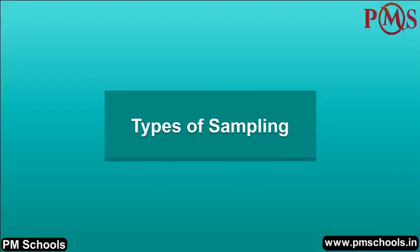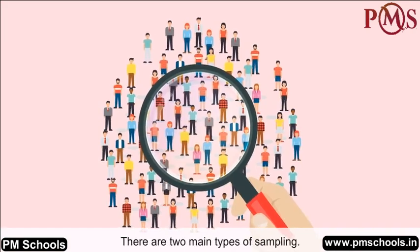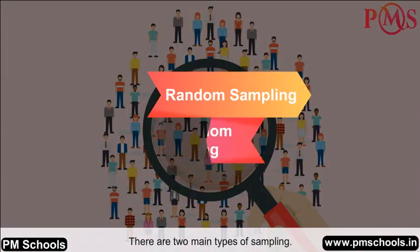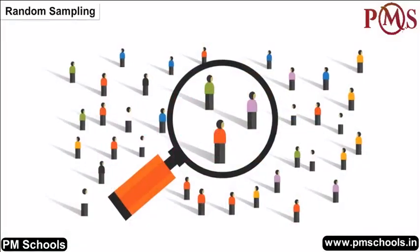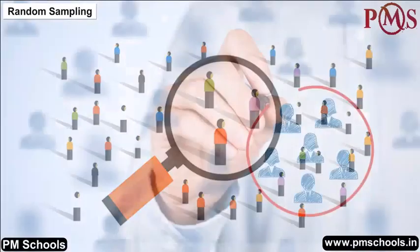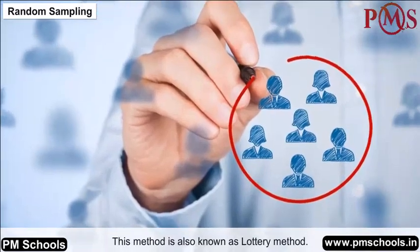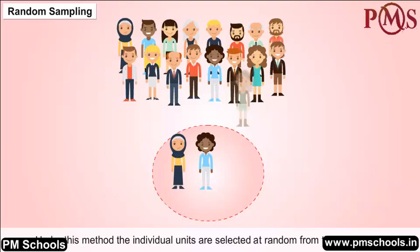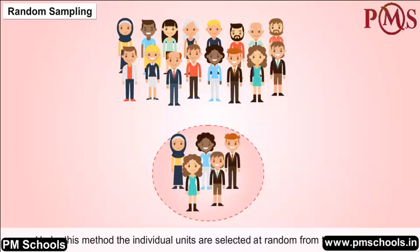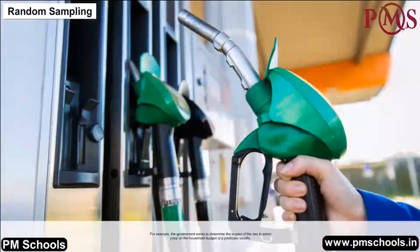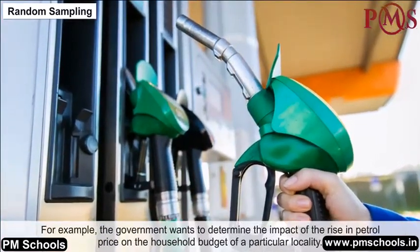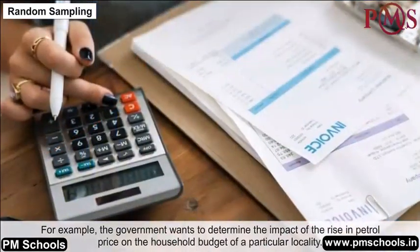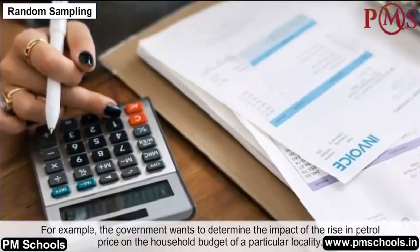Types of Sampling: There are two main types of sampling — random sampling and non-random sampling. Random Sampling is also known as the Lottery Method. Under this method, individual units are selected at random from the population. For example, the government wants to determine the impact of a rise in petrol price on the household budget of a particular locality.